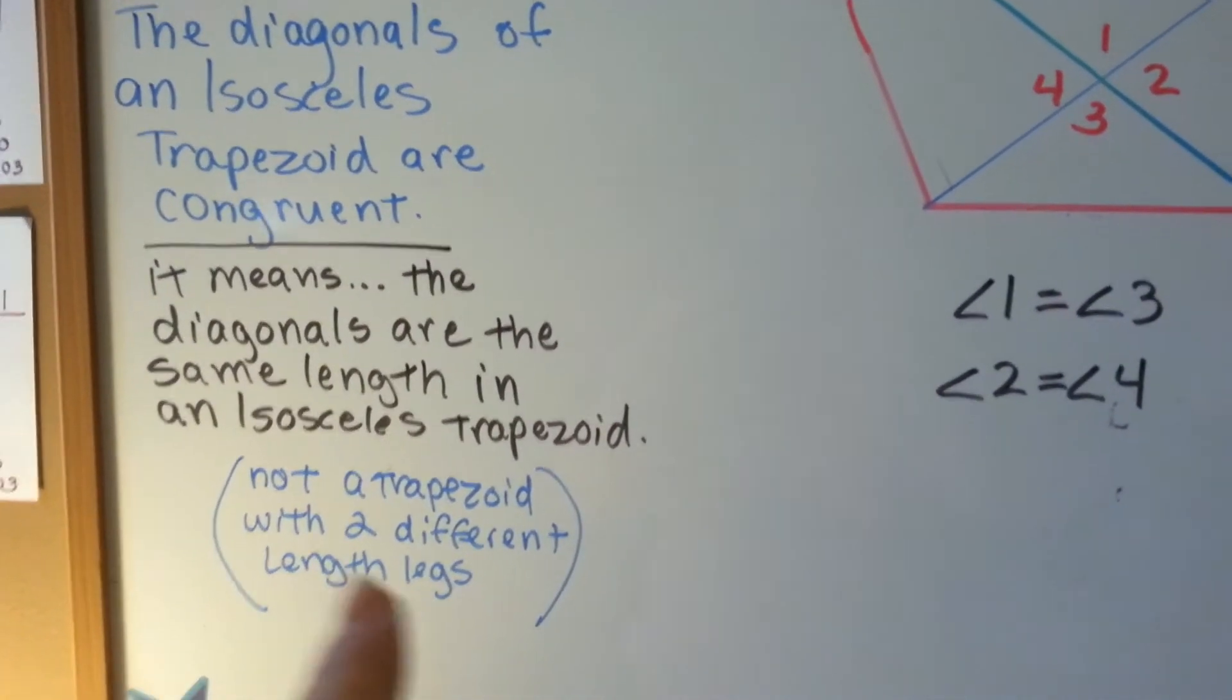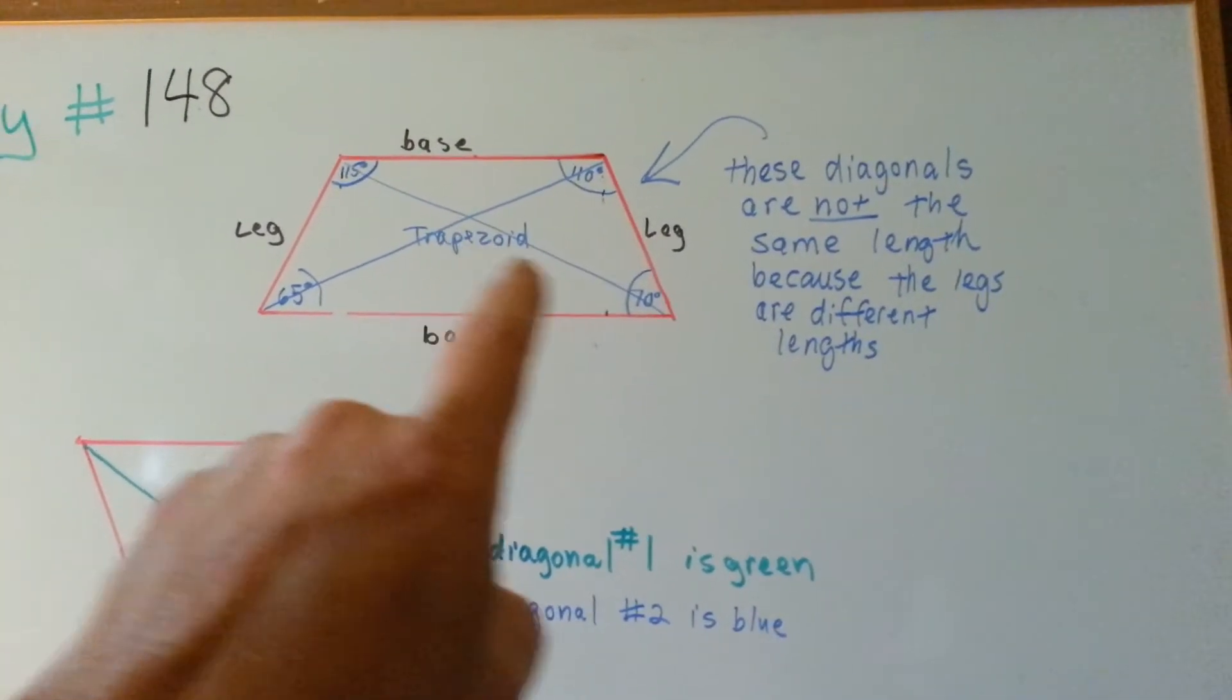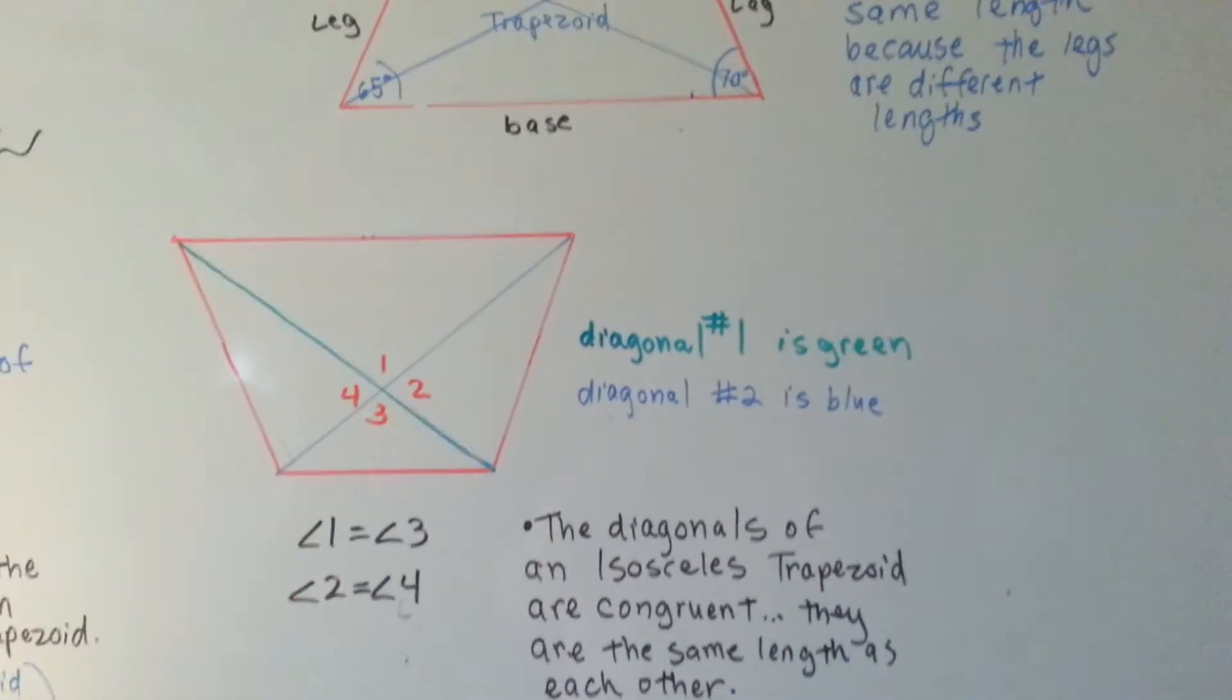not one with two different leg lengths, not this one. The diagonals are not the same length because the legs are different lengths. It's only for an isosceles one.